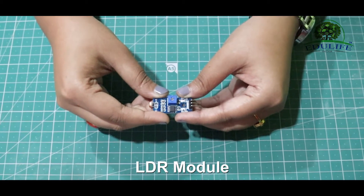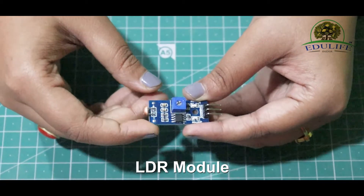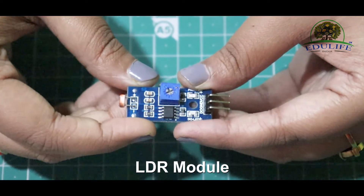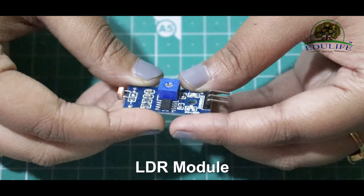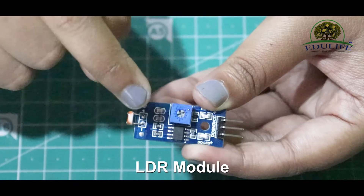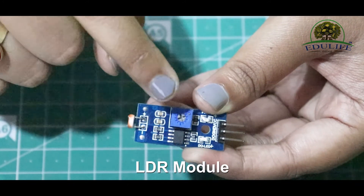The LDR component is used to sense light. The pins are: DO, GND, and VCC. VCC is the positive connection, GND is the negative connection, and the potentiometer adjusts light sensitivity.